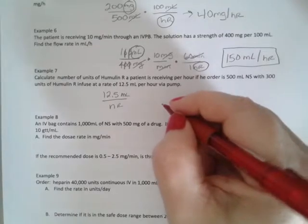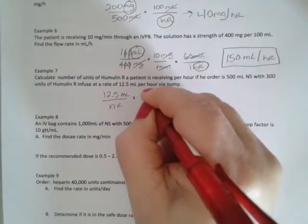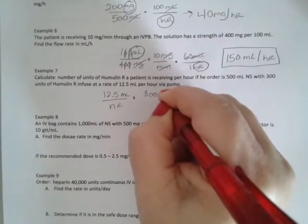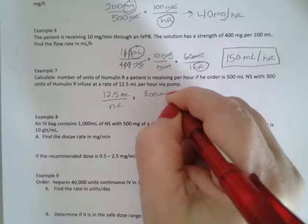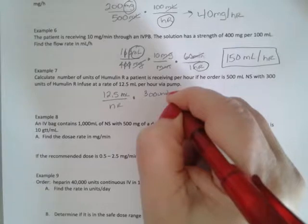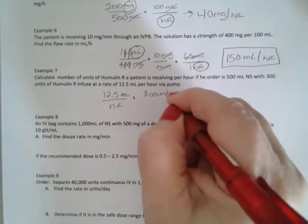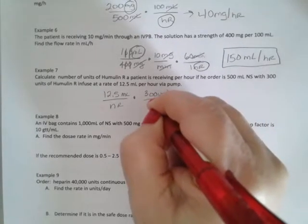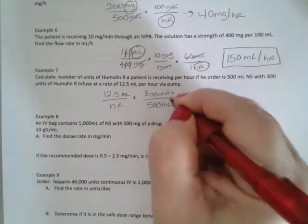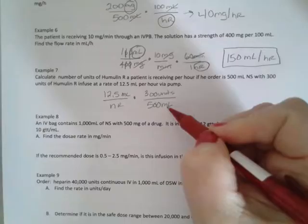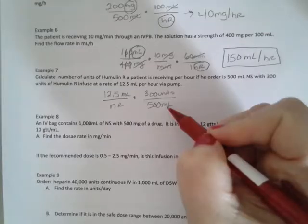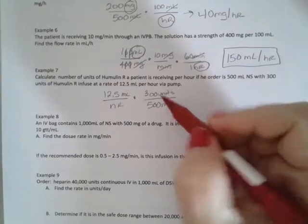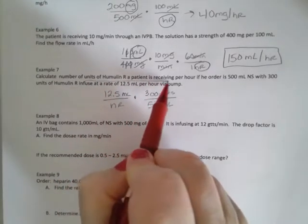The order is 300 units in 500 milliliters normal saline with 300 units. So 300 units are in 500 milliliters. I had to put the milliliters in the denominator so they'd cancel, because I want units per hour. That's what the question is asking, units per hour.